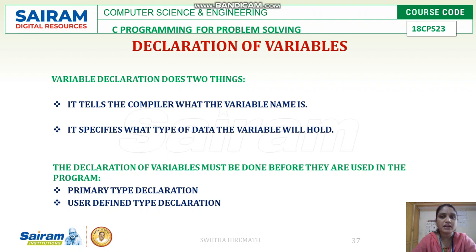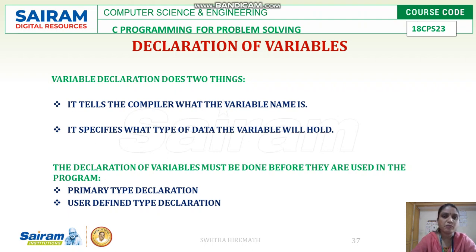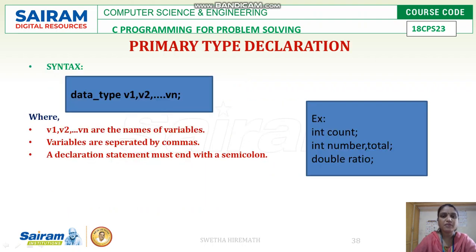Primary type declaration is based on the primary data types — integer, float, and character. Based on that we are going to declare the variables, or it may be based on user-defined data types. A user-defined type declaration will include user-defined data type values. We will first move on with primary type declaration, then go on with user-defined type declaration.